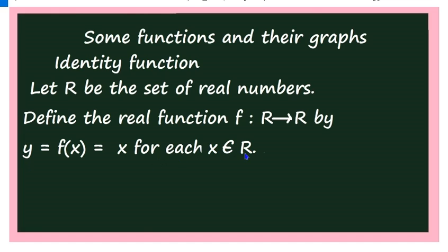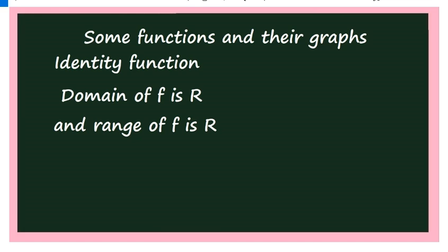For what values of x is f(x) defined? f(x) is defined for every real number, therefore the domain is the set of real numbers. And since every real number is an image — the image of 5 is 5, the image of 13 is 13 — all real numbers occur as images. Therefore the domain is R and the range is also R.